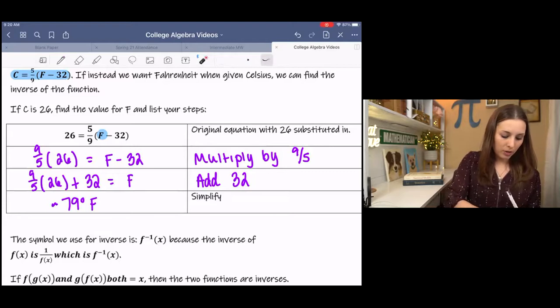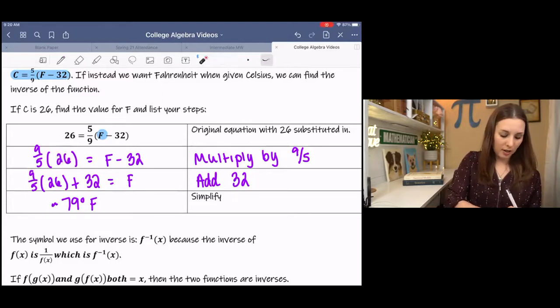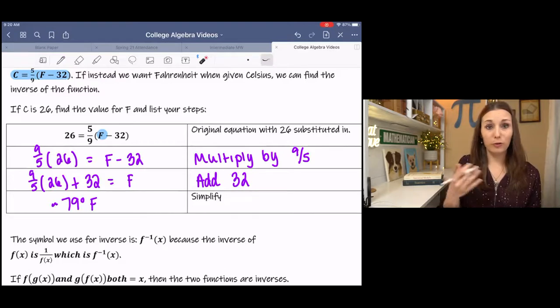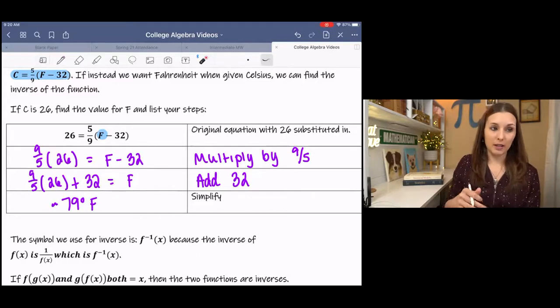Now, we could pretend that this was a C and leave it a C. And then we would have the formula for Fahrenheit. And we could use the formula over and over again. And that's what we're going to be looking at today.